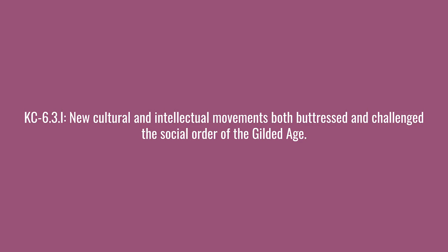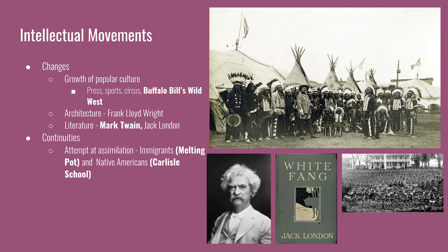The next key concept: new cultural and intellectual movements both buttressed and challenged the social order of the Gilded Age. For changes, there is a growth of popular culture — people have more disposable time and disposable income. They are buying newspapers and magazines and are exposed to the same things. Spectator sports grow in popularity, with baseball the biggest example, as cities across the country have their own professional teams. There are circuses and variety shows like Buffalo Bill's Wild West, new styles of architecture called prairie style made popular by Frank Lloyd Wright, and new movements in literature like naturalism with Jack London's White Fang or realism with Mark Twain. For continuities, there is a continued attempt at assimilation — nativists insist immigrants take on American culture and the idea of the melting pot is developed. Schools with a specific purpose to assimilate Native Americans are founded, some funded by the federal government, the first and most famous being the Carlisle School by William Henry Pratt.